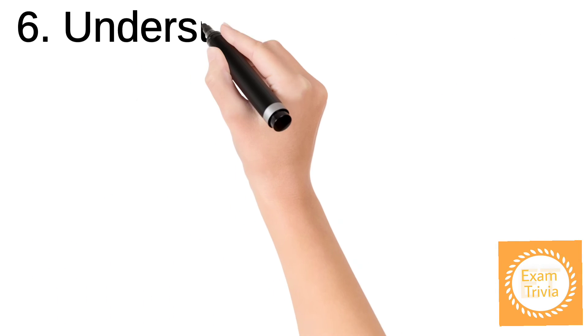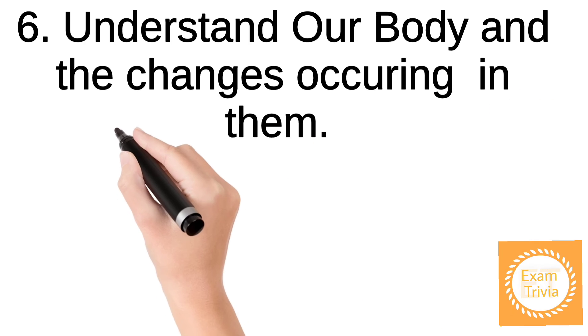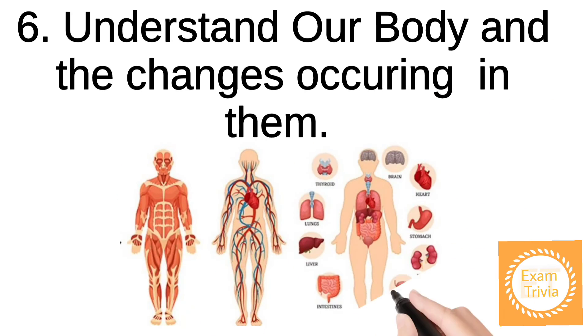Understand our body and the changes occurring in them. Humans, exactly like animals and plants, have a life cycle. Continuous changes happen every second in our bodies. Those changes have irreversible impacts, given that the timeline is going in one direction. Growth, metabolism, reproduction, giving birth, aging, or even breathing are all processes that we can't explain without studying biology.